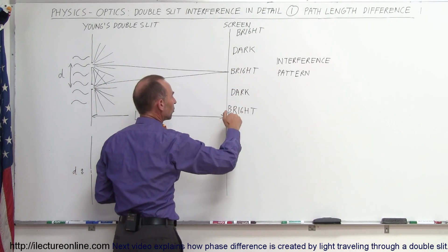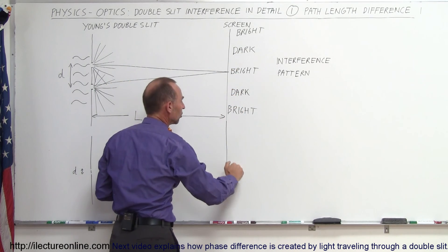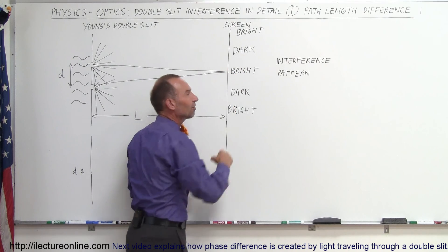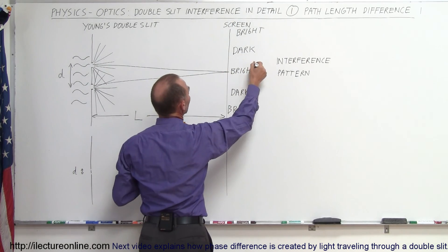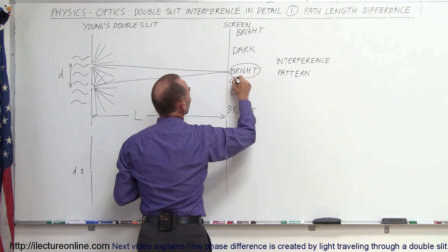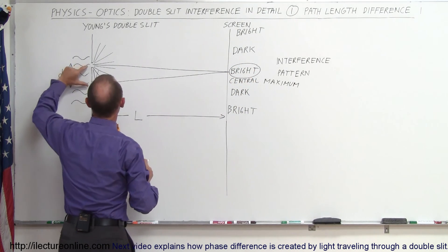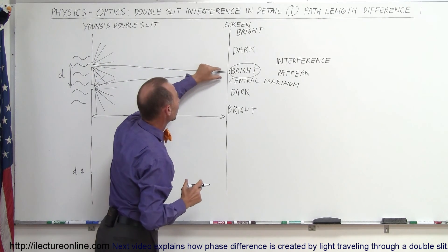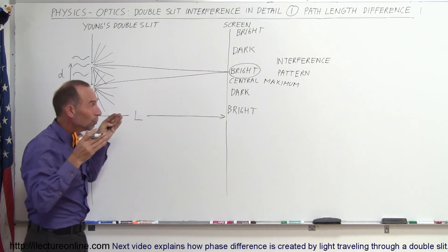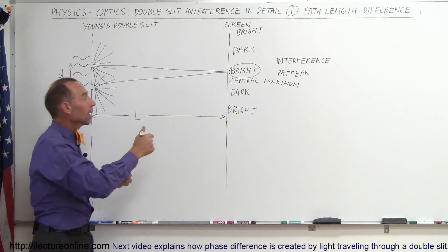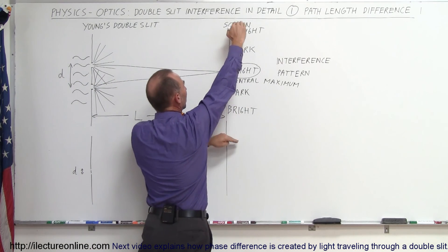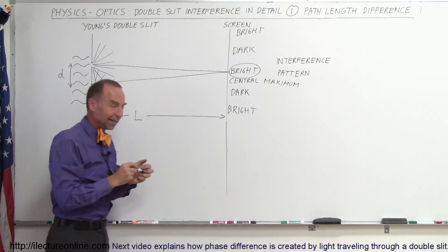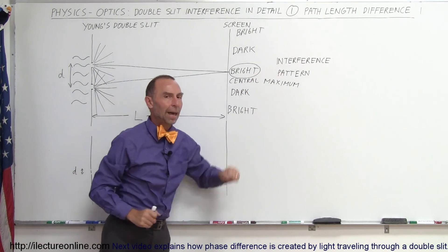We go from bright to dark to bright to dark to bright to dark, on both sides of what we call the central maximum spot. In the very center, this is called the central maximum — the spot directly across from the two slits. That's where the two beams come together and you see a bright spot, then on either side we have a dark spot, then a bright spot, dark spot, bright spot, and so forth. That's called an interference pattern.